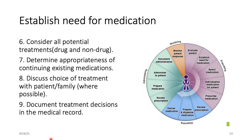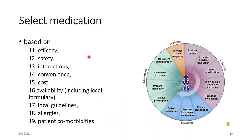The next step is establishing the need for medication. Consider all possible or potential treatments — drug or non-drug. Determine the appropriateness of continuing existing medication. Discuss choice of treatment with the patient and family member if possible, and document the treatment decision in the medical record. When selecting medication, consider efficacy, safety, interactions, convenience, cost, availability, local formulary, local guidelines, presence of allergy, and patient comorbidities.